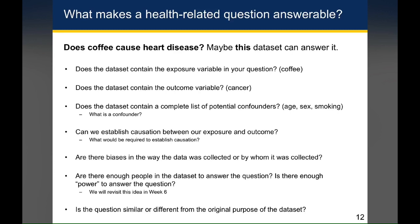Not surprisingly, the first thing the data set would need to contain is the exposure variable — does it tell you how much coffee individuals drink for every row in the data set? Next, you'd want to make sure the data set contains the outcome variable — does it tell you who has or has developed heart disease and who hasn't? You'd also want to make sure the data set has all the variables that might be potential confounders, including things like age, sex, and smoking.